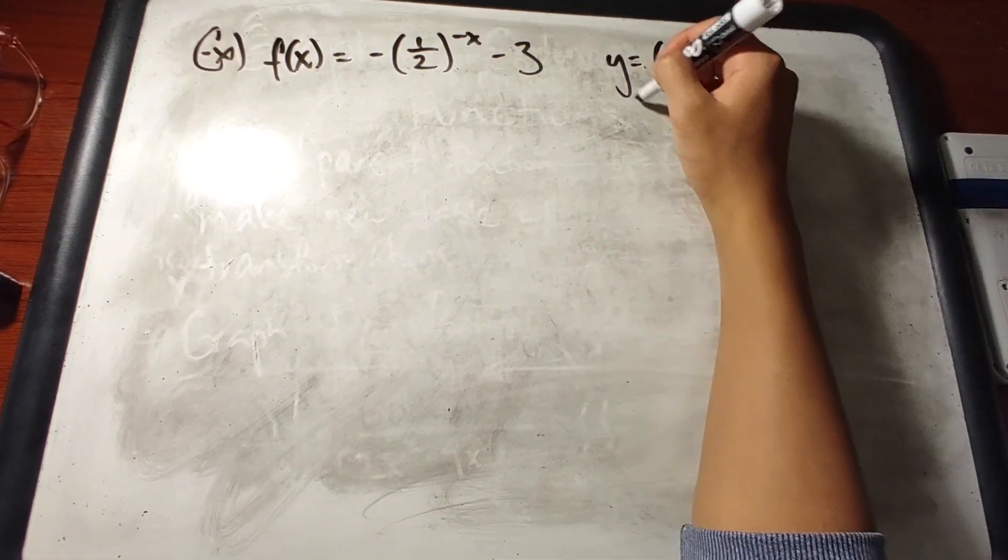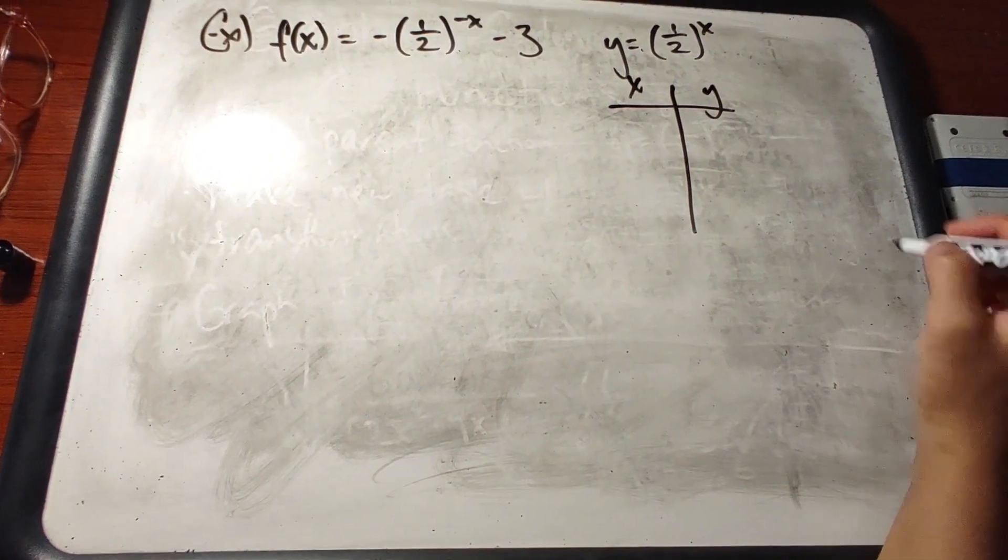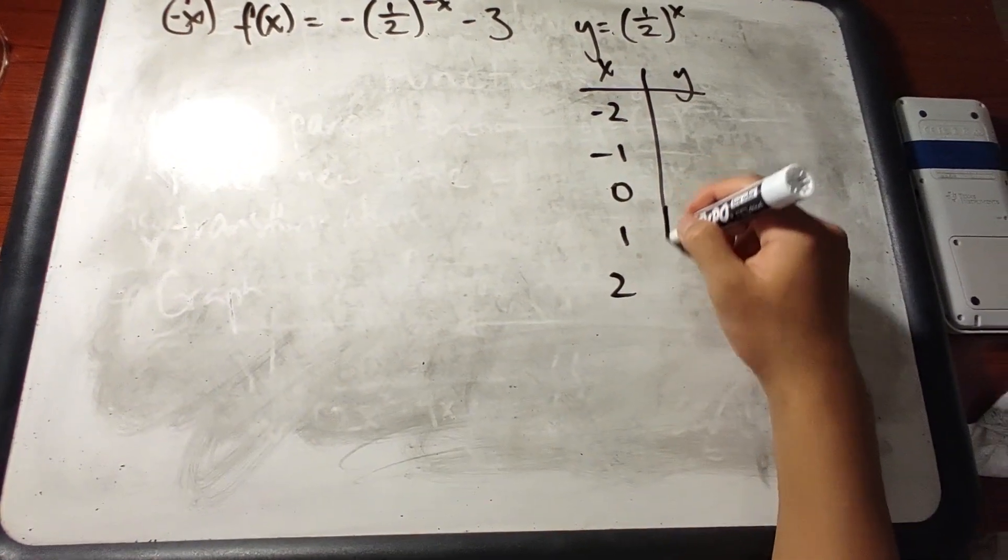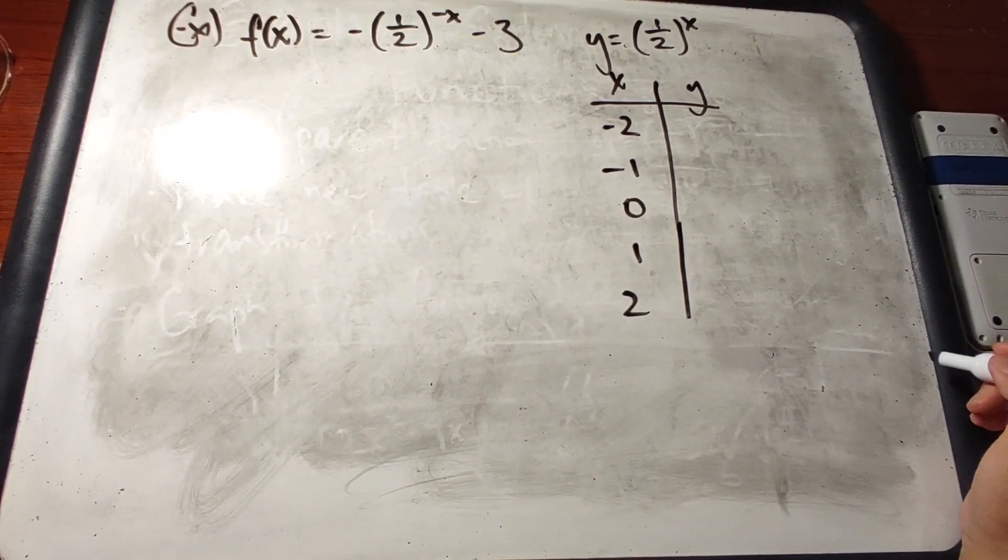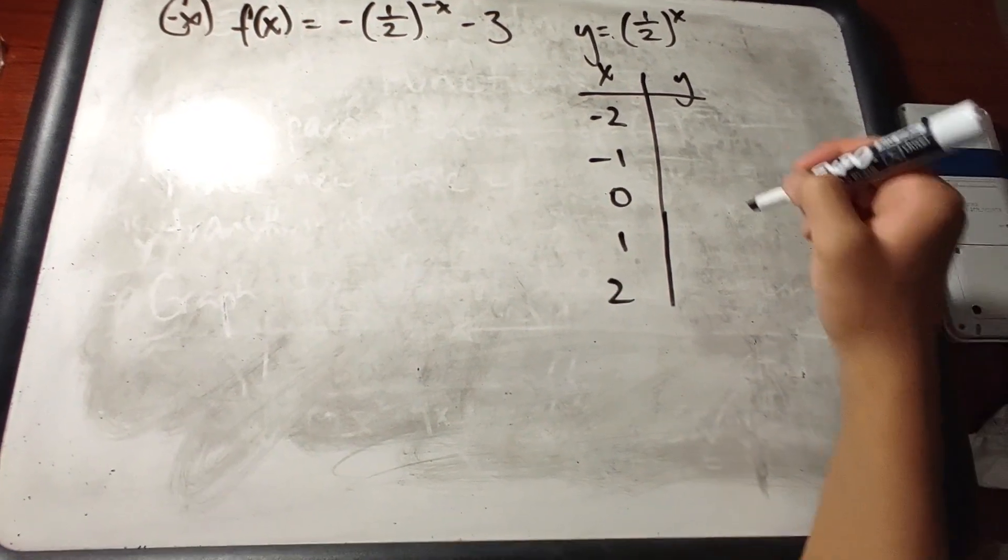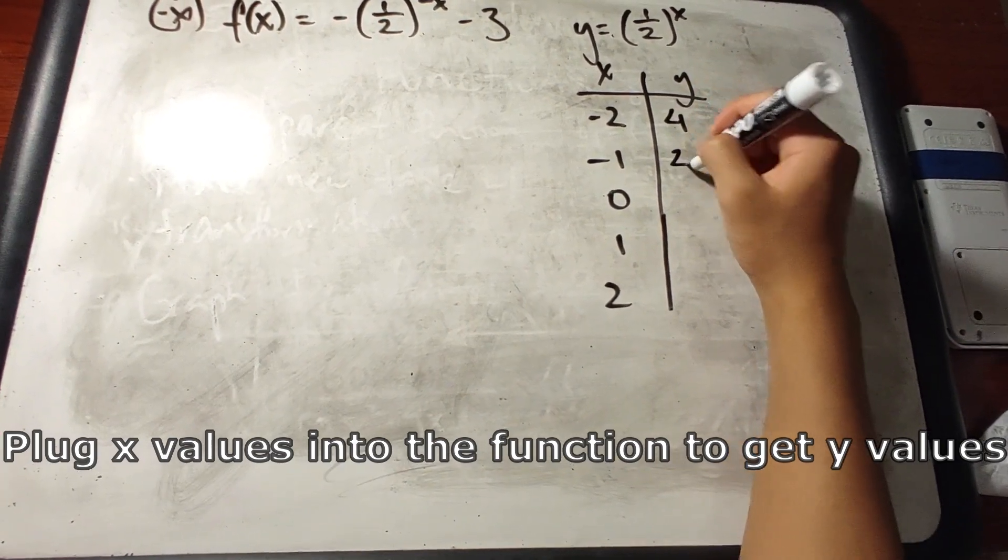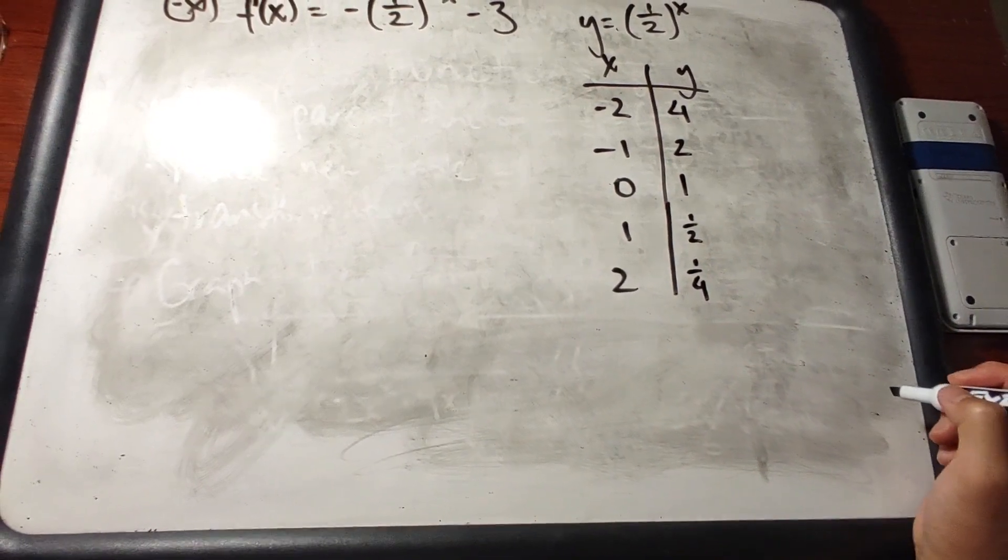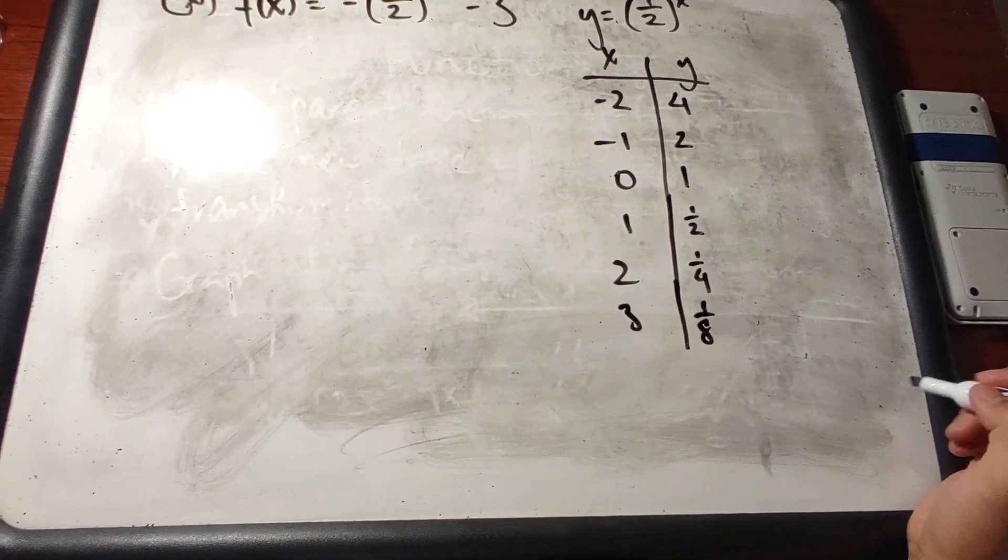So when we make a table for the parent function, we could give some values like this. And we input the x values into the parent function to give out these values. And this is our parent function graph.